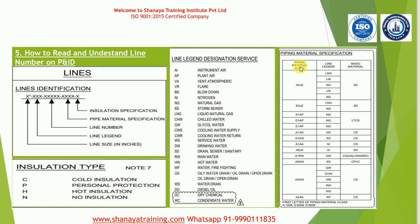There is a piping material specification legend available in the legend sheet showing the base material. Note that piping material class coding is different for different projects. For example, if the piping material specification code is 'A0JJ,' this means the piping material class handles services like LNG, LNI, NG, VR, and NG. The base material for this class is SS — stainless steel.